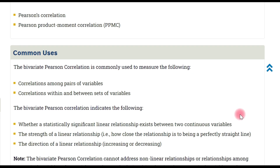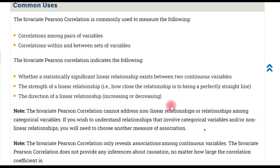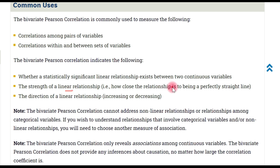The Pearson correlation coefficient indicates whether a statistically significant linear relationship among two continuous variables exists. It also indicates the strength of the correlation coefficient and the positive or negative direction of the relationship, either increasing or decreasing.